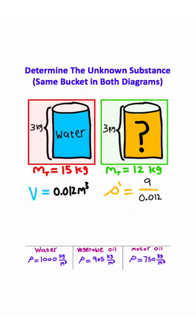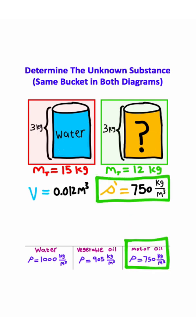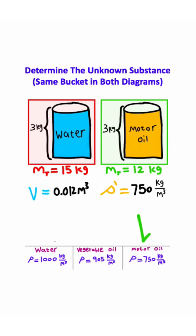And then simplifying this fraction, I get 750 kilograms per cubic meter. Notice that this density matches motor oil, so that means the unknown substance is motor oil. And that's the answer to this problem.